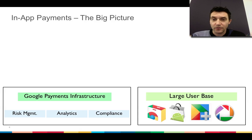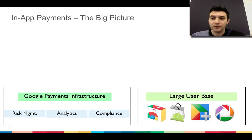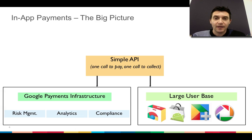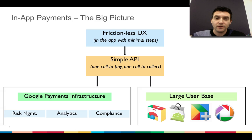You also don't need to worry about access to a large user base. With in-app payments, you have access to a lot of users from different Google properties, such as the Chrome Web Store or Google Plus. For developers, the API is very simple — one call to pay, one call to collect. And last but not least, users get to make a purchase with minimal steps.